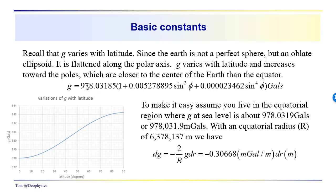So we end up with 978.03185. We substitute that in for g. R in this case, the equatorial radius of about 6,378,137 meters. And just plugging those values into this expression here, we get for one meter for dr, we get minus 0.30668 mgal per meter.